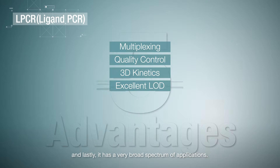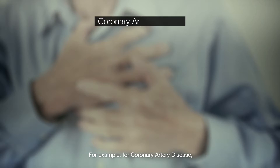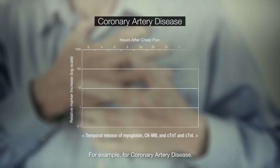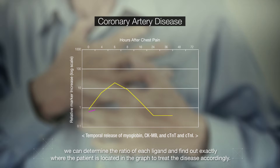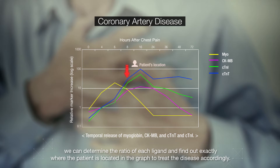And lastly, it has a very broad spectrum of applications. For example, for coronary artery disease, we can determine the ratio of each ligand and find out exactly where the patient is located in the graph, to treat the disease accordingly.